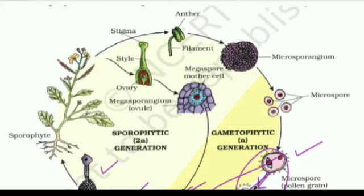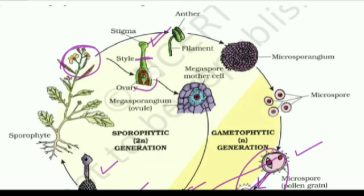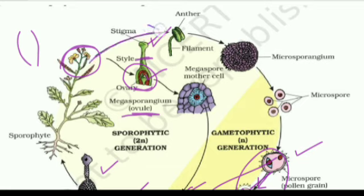Looking at the flower structure in the diagram, you can see the stigma at the top, the style below it, and the swollen ovary structure. The ovary contains ovules. The stamen consists of the anther and filament, and within the anther there will be microspores.